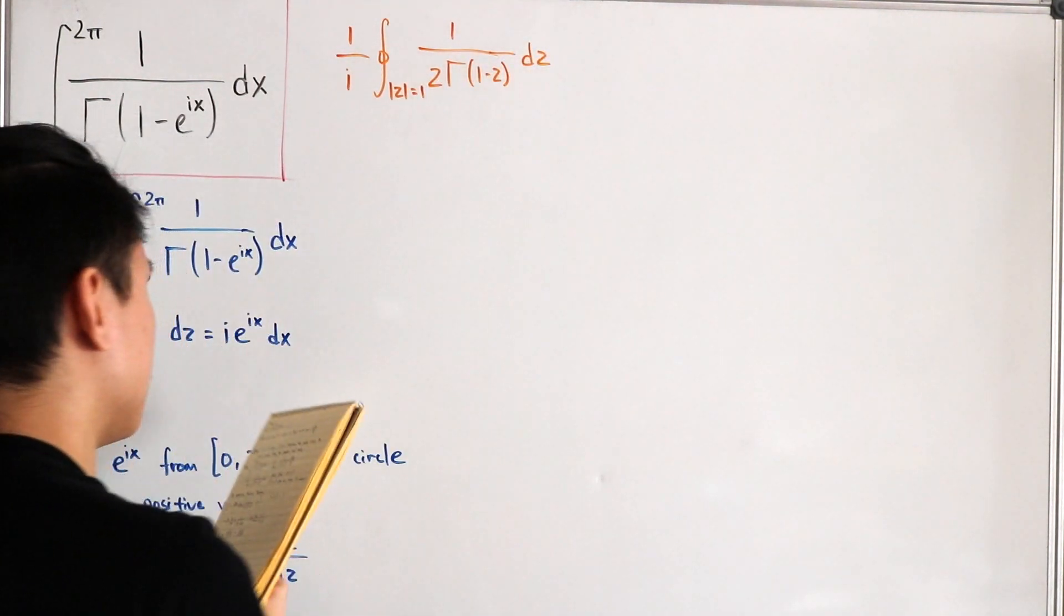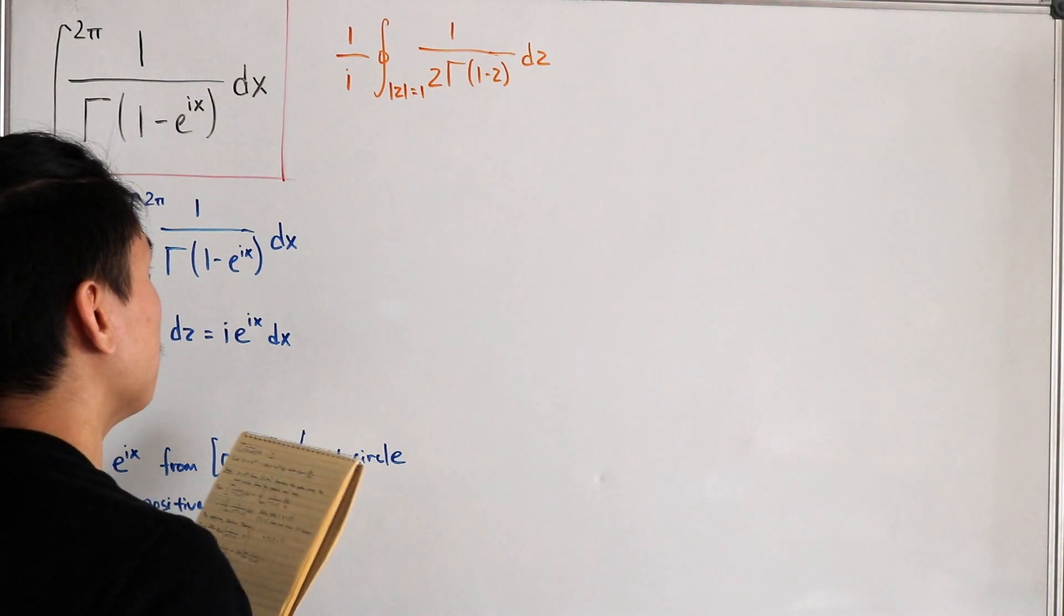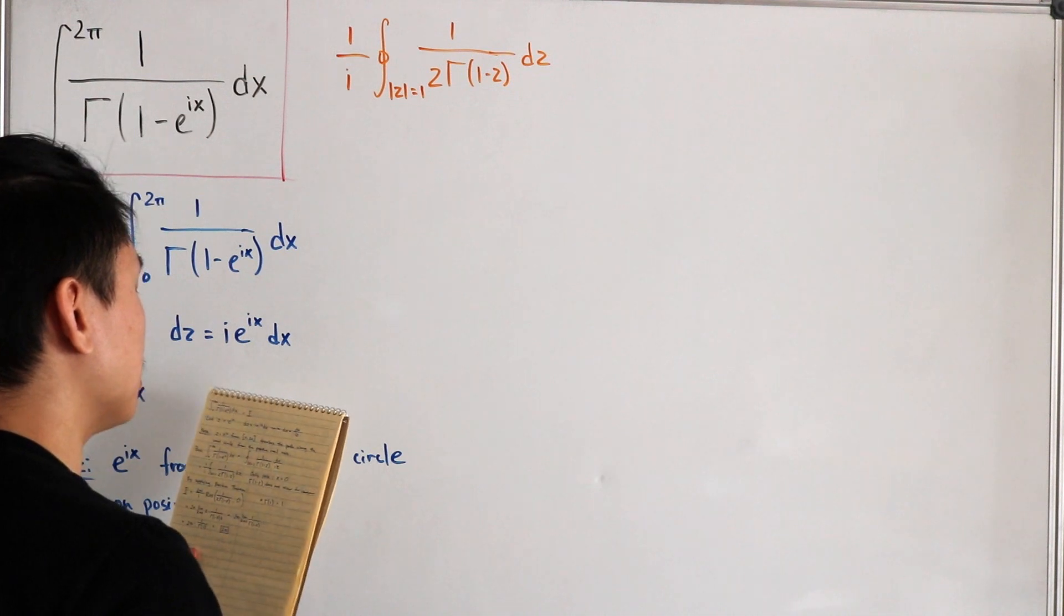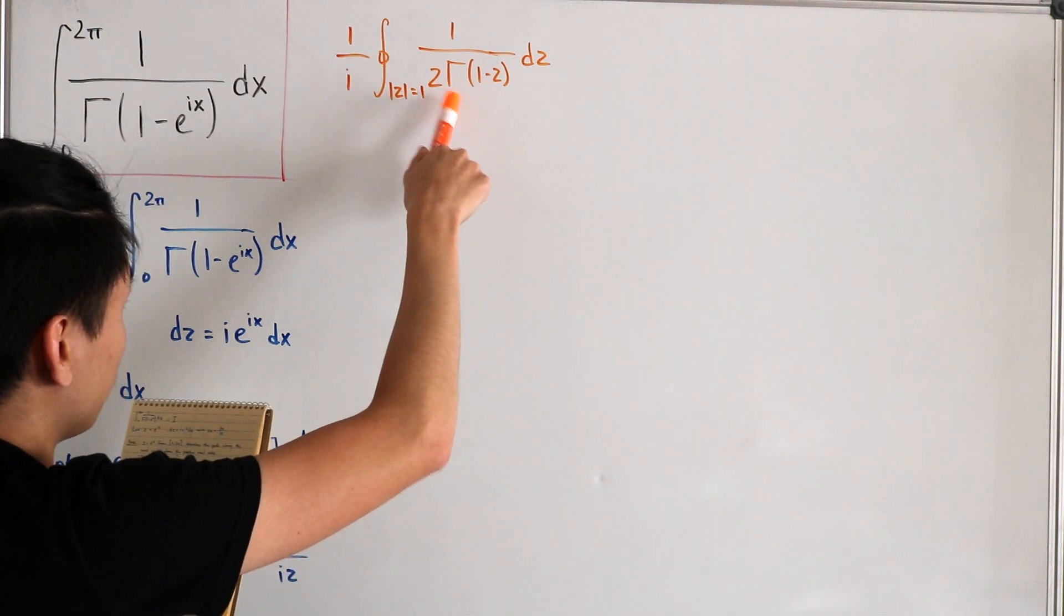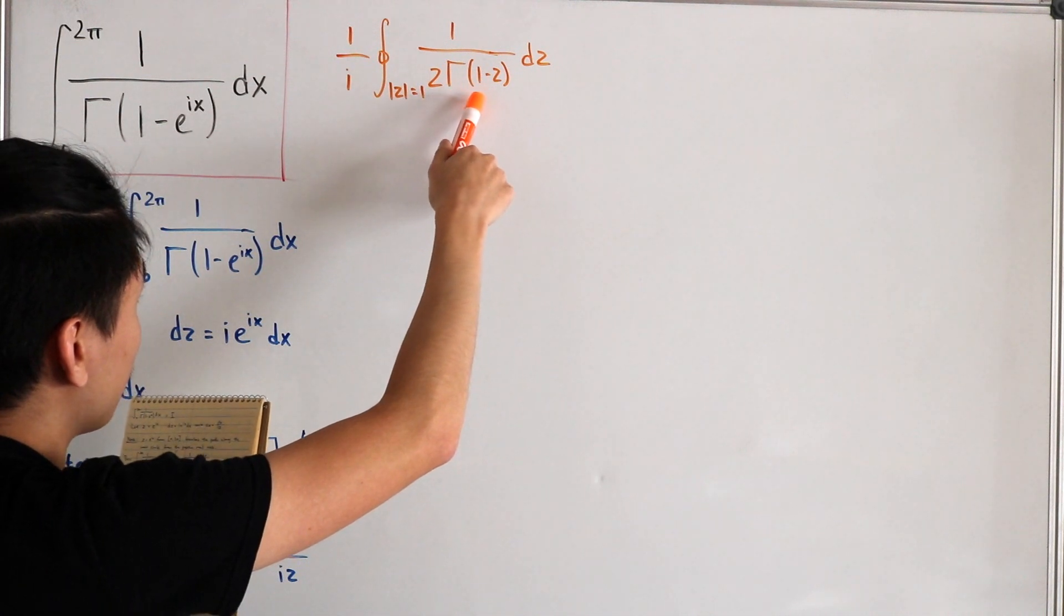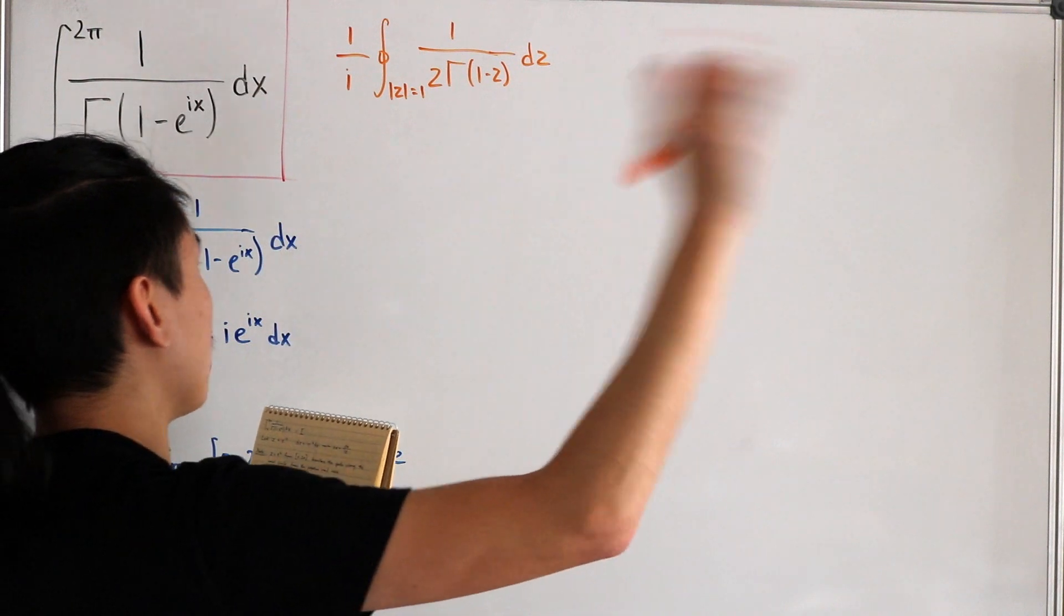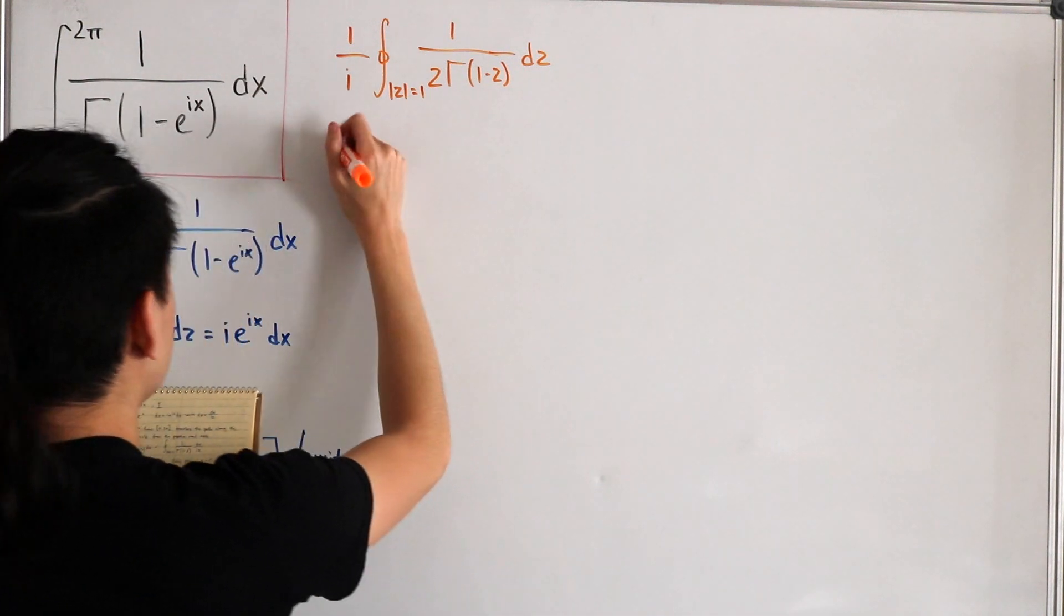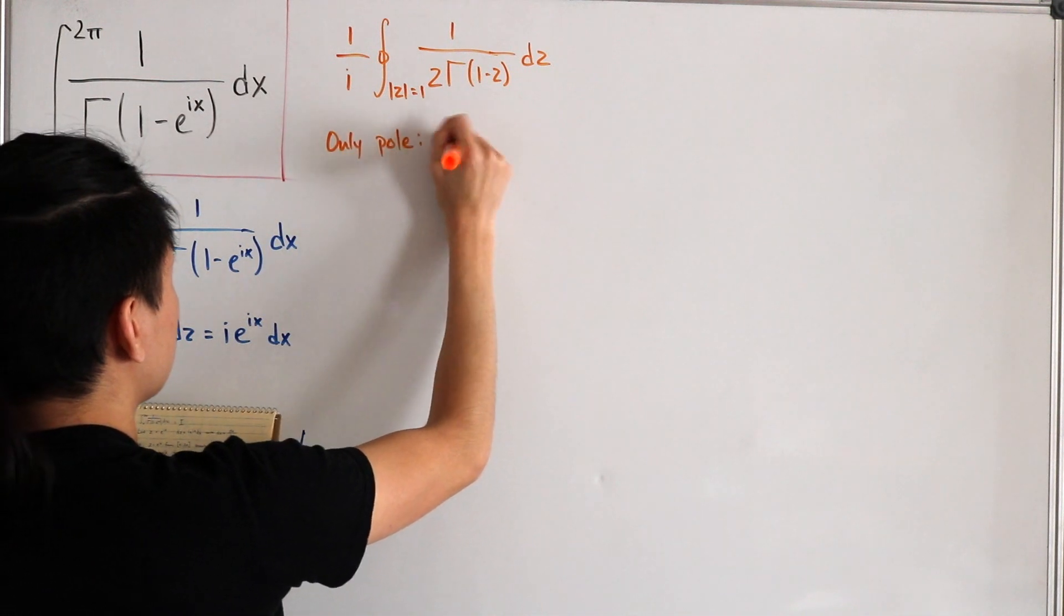So now notice that if we're looking from our function, the only pole exists that we need to calculate the residue is z equals zero. Since for gamma, for gamma one minus z to be a pole, of course that's equal to zero, but that's actually not possible. So that's actually out of our exclusion. So that means we could say that the only pole is z equals zero.